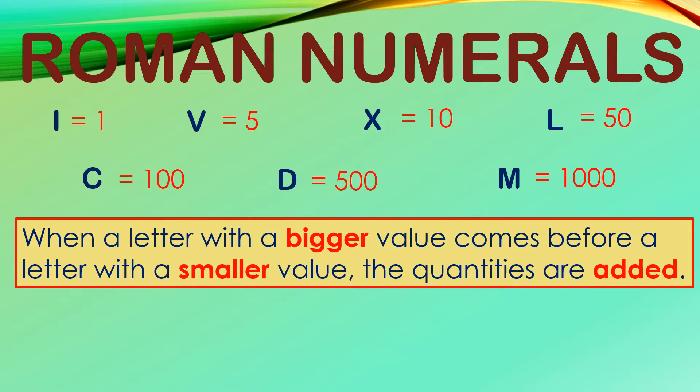For example, letter X, which is 10, comes before I, which is only 1. Obviously, 10 is bigger than 1. In this case, we add, which means 10 plus 1 equals 11. Here is another one. L, which is 50, if written before V, which is 5, we add the values, we get 55.